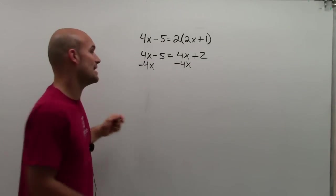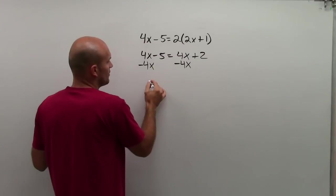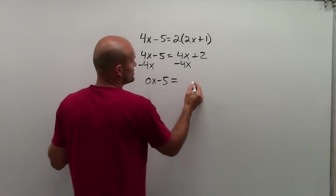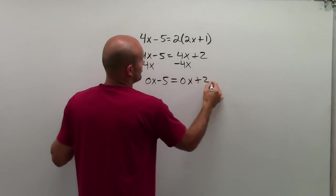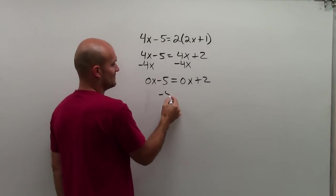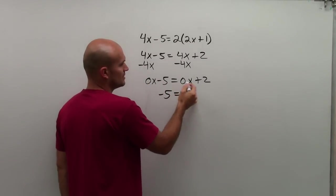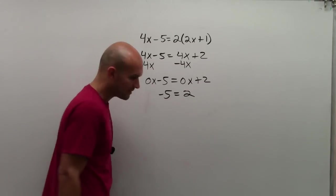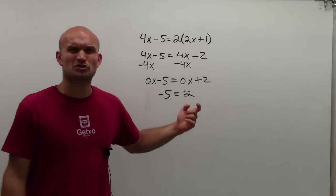Well, there's something really important that happens here. We notice that 4x minus 4x is 0x minus 5, which equals 0x plus 2. Well, 0 times x is 0. 0 minus 5 is negative 5 equals 2. And then we look at that and we say, does negative 5 equal 2?